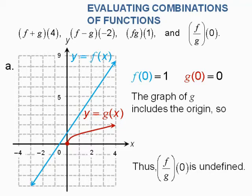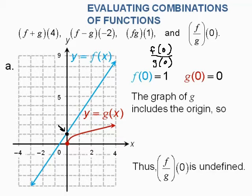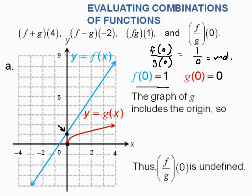Now let's do f divided by g of 0, written the good way as f of 0 divided by g of 0. On the blue graph, when x is 0, y is 1, so f of 0 equals 1. The problem is g of 0 comes out to 0. So we have 1 over 0, which is undefined. Sometimes g of 0 won't come out to be 0 and you can do it, so just be aware of that.